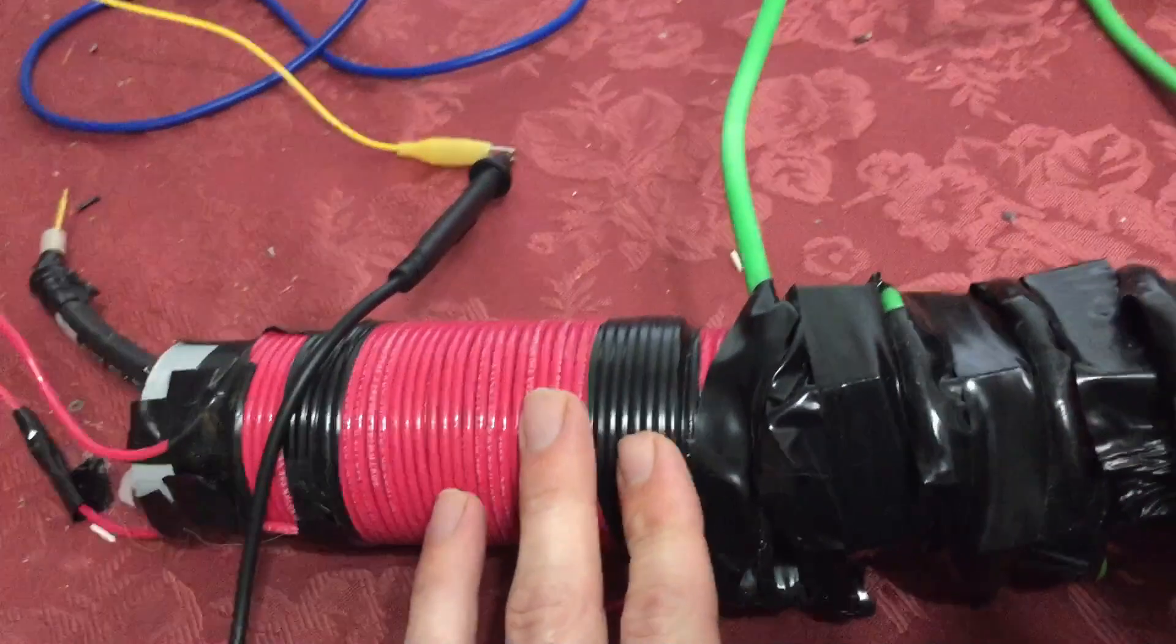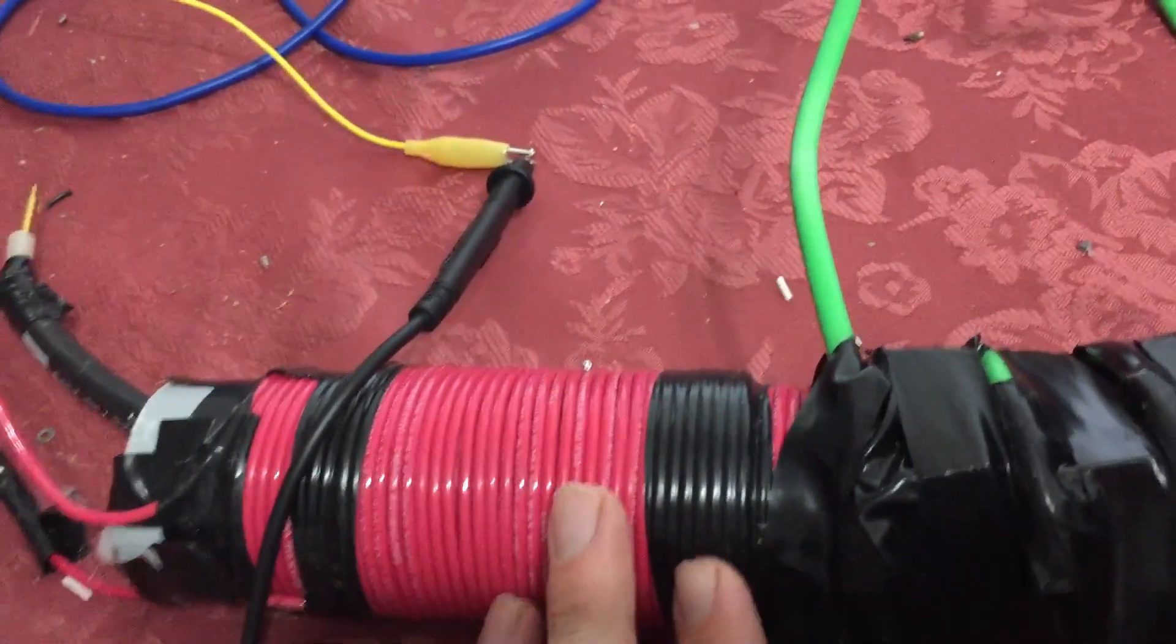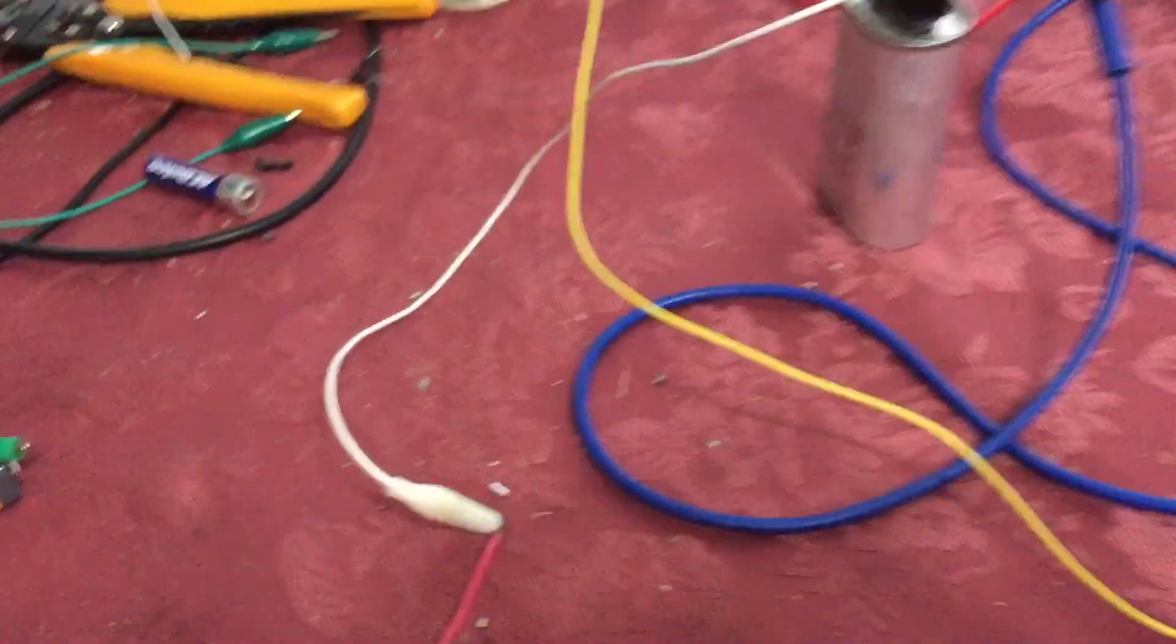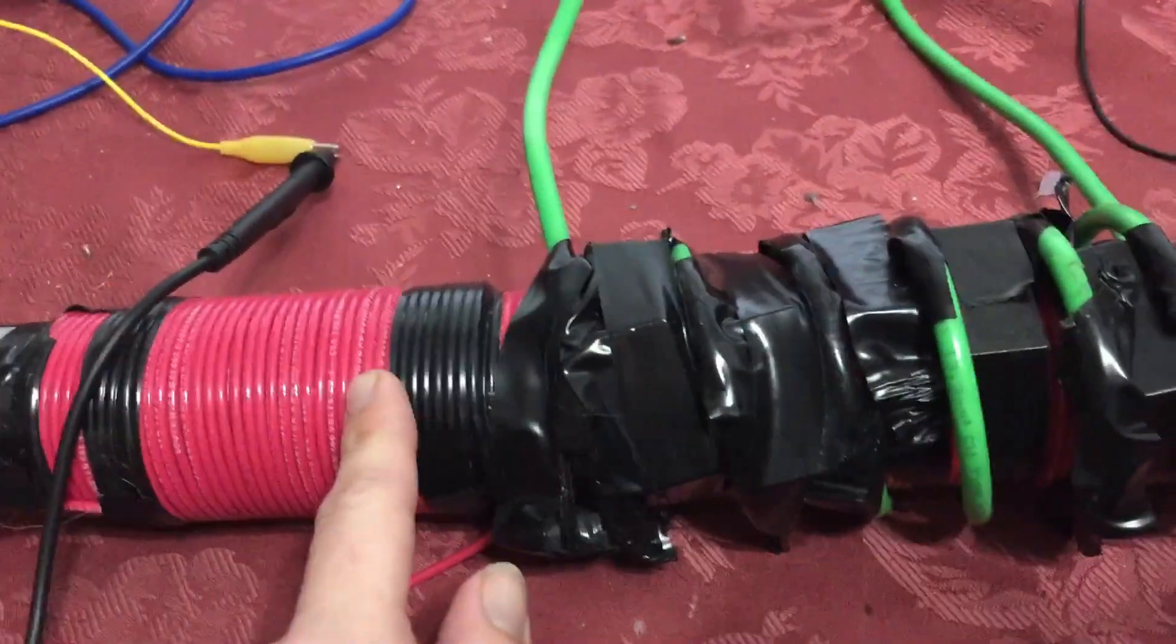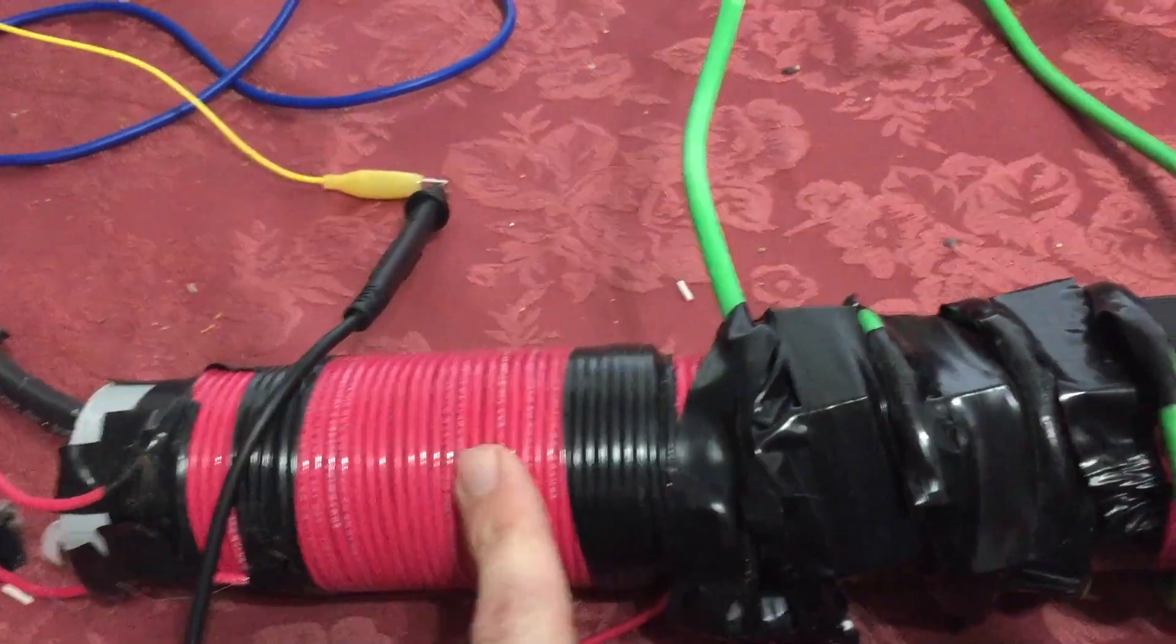So this was for something else but I repurposed it because it works very well for this here. So what I have is I have the positive side of the capacitor going in through the coil here. There's actually an L1 and L2 here that kind of takes care of the high frequency.